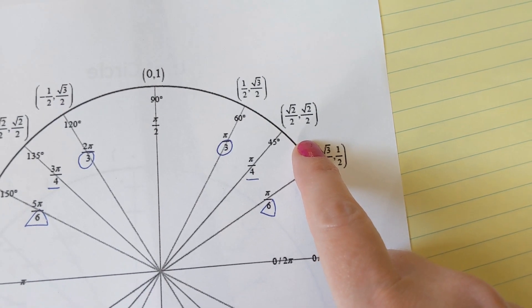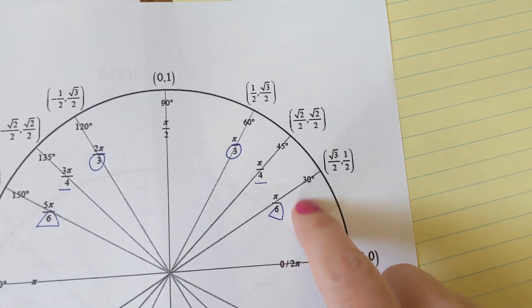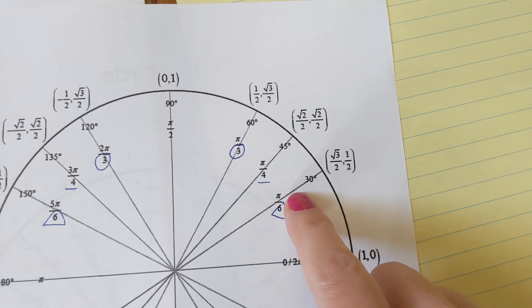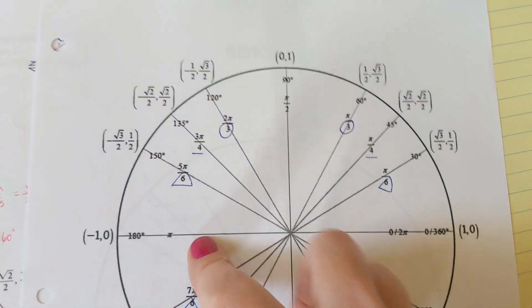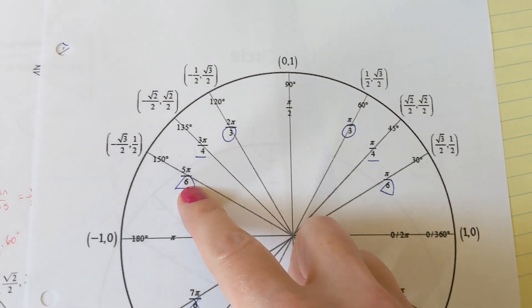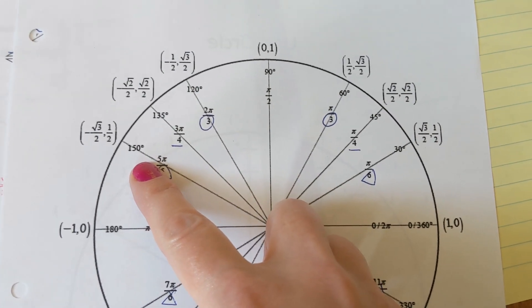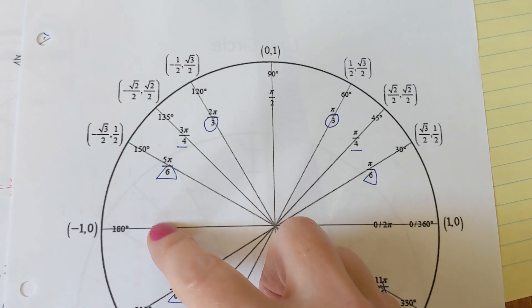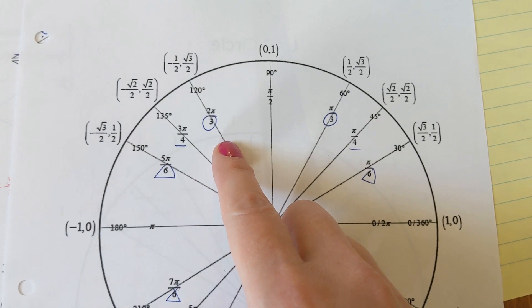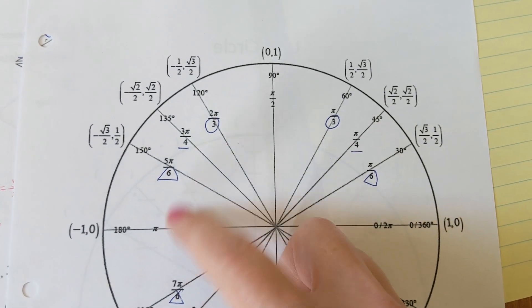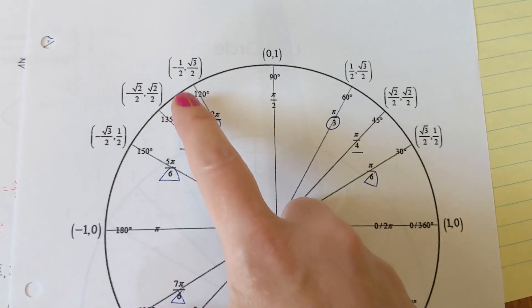To figure out what kind of angle it is, it's about the reference angle, how far away it is from the x-axis. That's what makes this a 30. This one is also a 30 degree angle. Even though it says on it that it's 150, it's 30, because it's 30 away from 180.